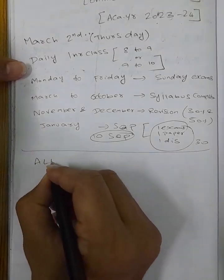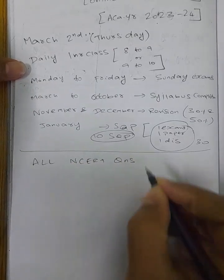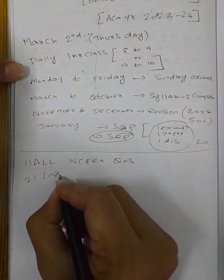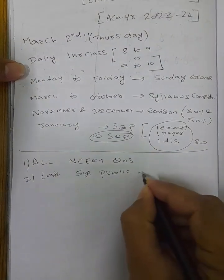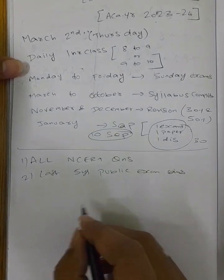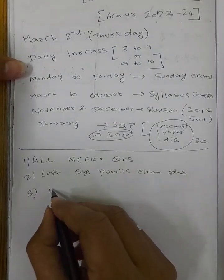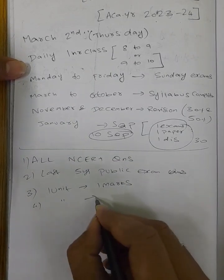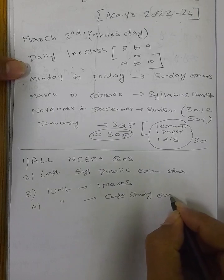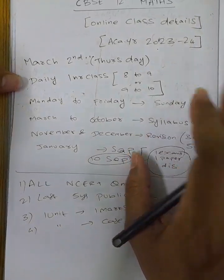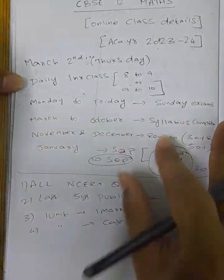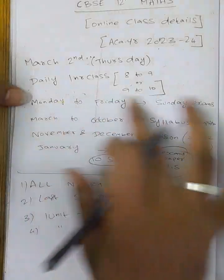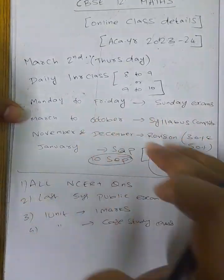Regular and full class will cover NCAT questions first. All the NCAT questions are full questions. That is related to the last five years of public exam questions. Last five years of public exam questions, one unit at a time — each unit will discuss one more question side-by-side. In November and December there are 3P NCAT questions.